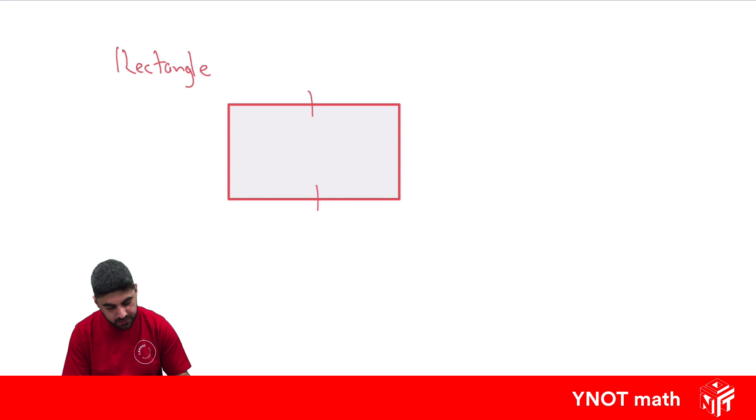And we're going to put a dash there and we're going to put two dashes here. So you'll notice those dashes are different, which means that those two sides are the same length, and those two sides are the same length. Let's make this one two millimeters and four millimeters.